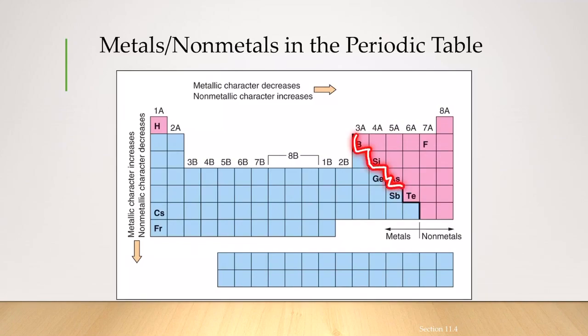If you look into this diagonal right here, everything on the left side of it are actually metals, whereas everything on the right side of it, which is this area, are non-metals.